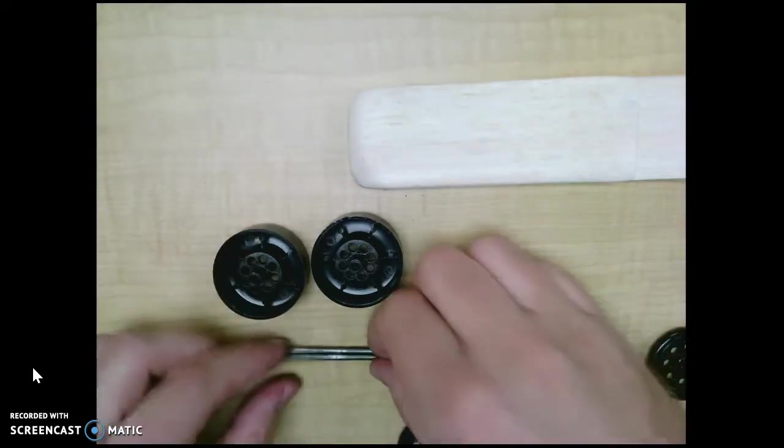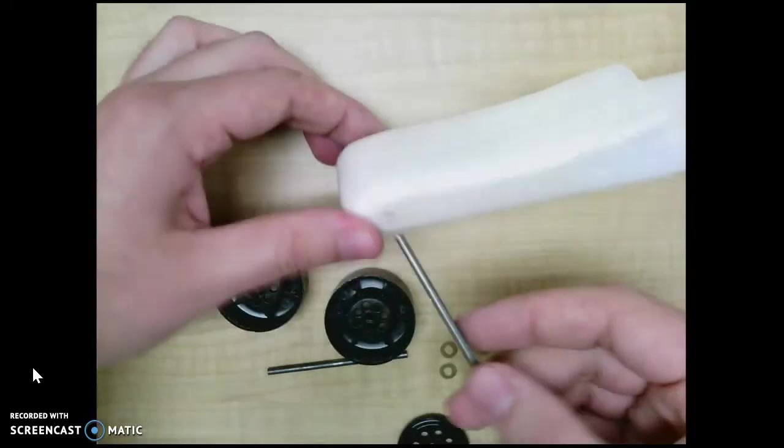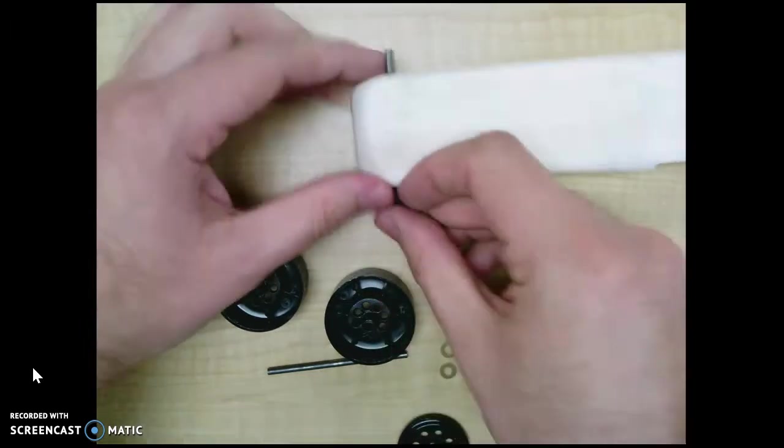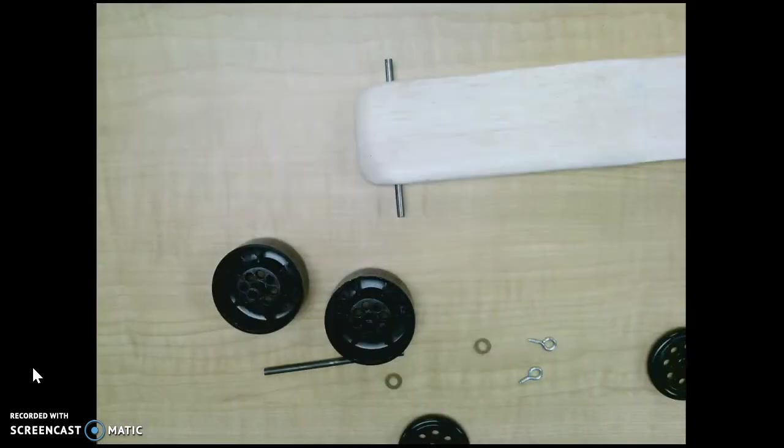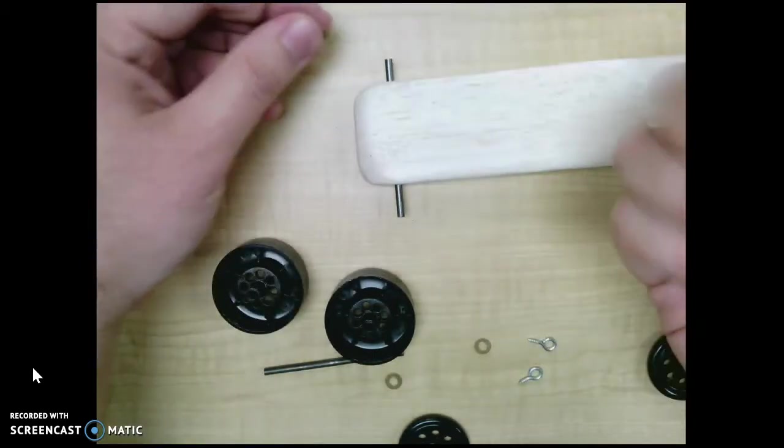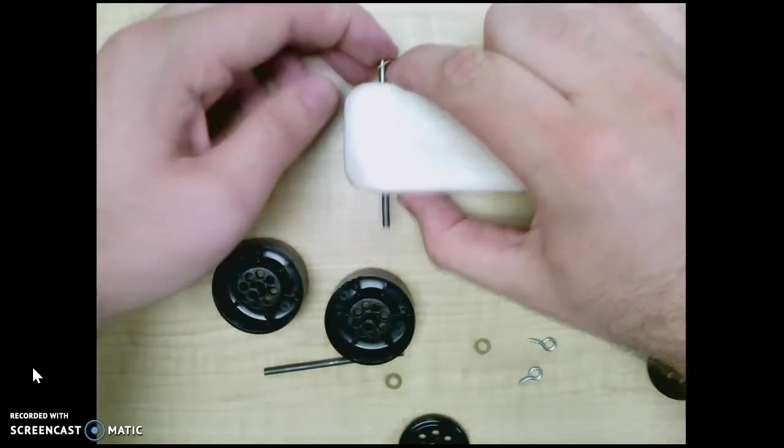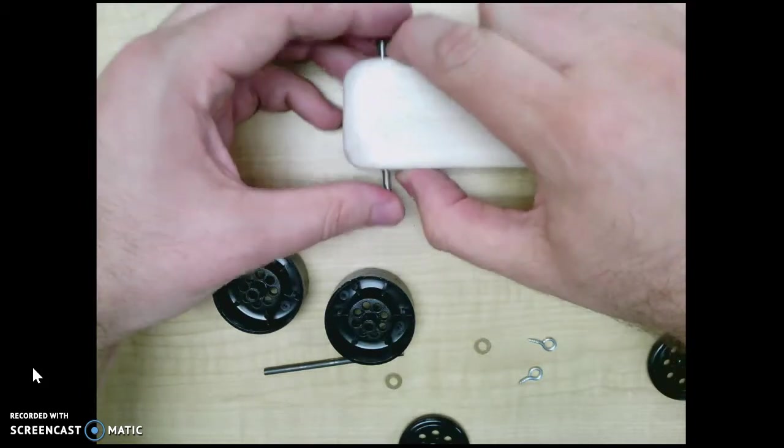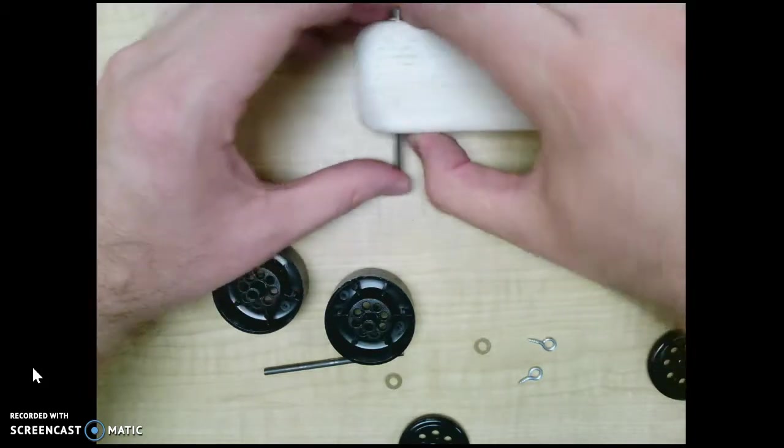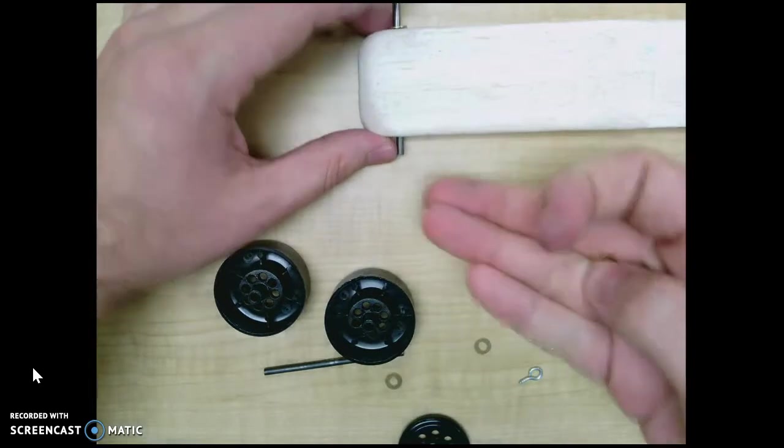Alright, so now we're up to the point where we have our plastic tube in there. We're going to put our metal rod through. And on each side, we've got these little brass washers. They're super small, but they're going to keep the wheels from rubbing. So we're going to put one on each side.